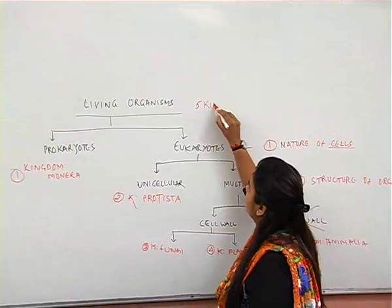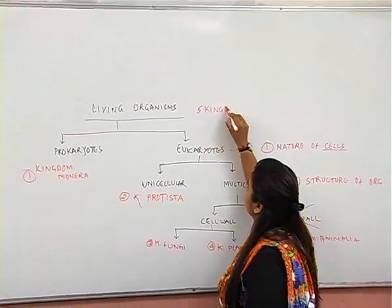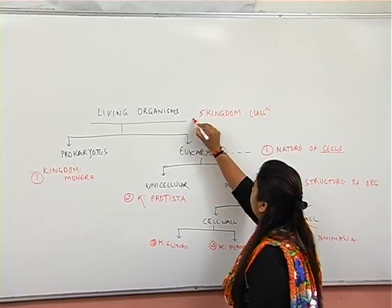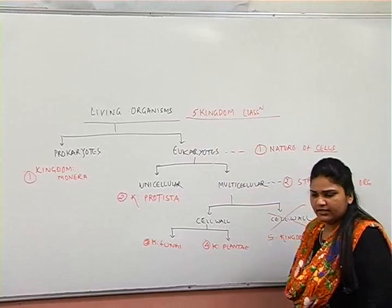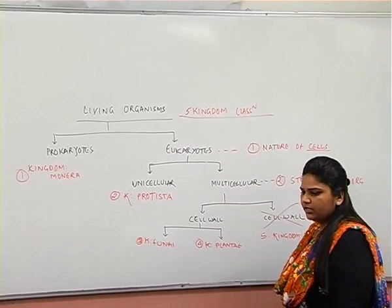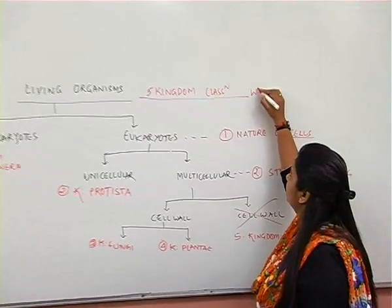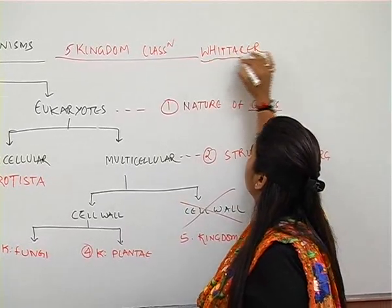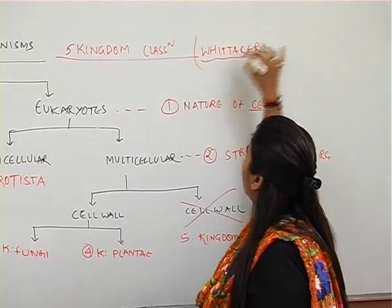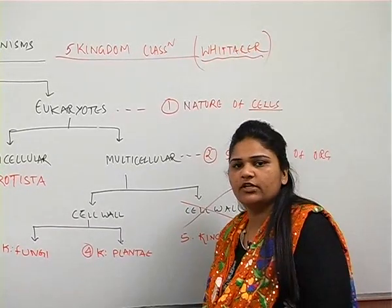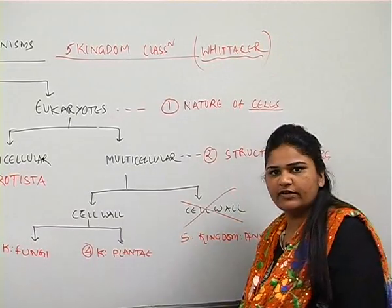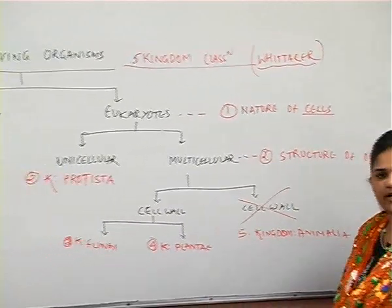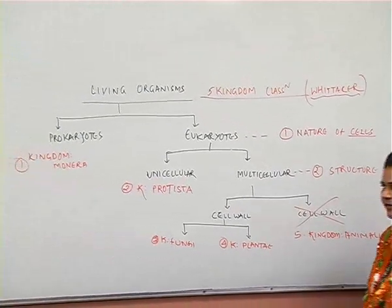This classification is called the Five Kingdoms classification, given by the scientist Whittaker. According to Whittaker, living organisms are completely classified into five kingdoms: Monera, Protista, Fungi, Plantae, and Animalia.